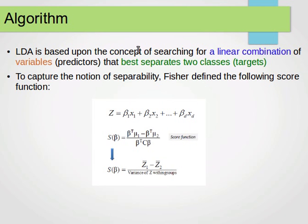LDA is based upon the concept of searching for a linear combination of variables. Notice it's a linear combination, which means if we have two variables or predictors, it's a straight line. If it's three, it's a plane. If more than three variables, then it's a hyperplane. The linear combination of these variables needs to best separate two classes. We are dealing with a binary classification problem now.